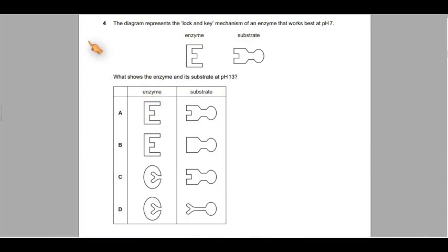Let's answer this question, question number four. The diagram represents the lock and key mechanism of an enzyme that works best at pH 7, so the optimum is at 7. Enzyme and that's the substrate - you know the difference by now.